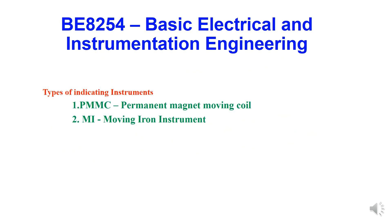There are two types of indicating instruments. One, a permanent magnet moving coil, shortly called as PMMC. Another one is moving iron instrument, which we call as MI instruments.